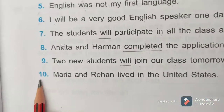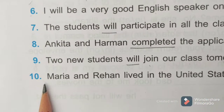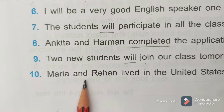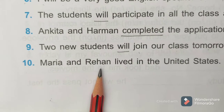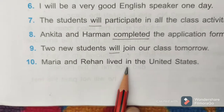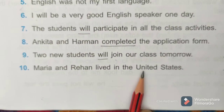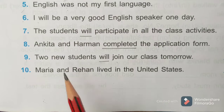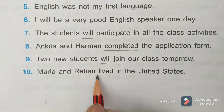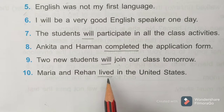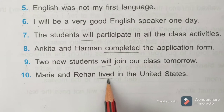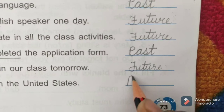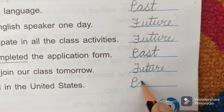Question 10: Maria and Rehan lived in the United States. Children, lived is past tense, so write here: past.